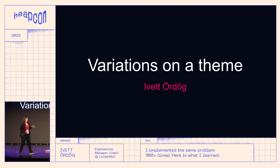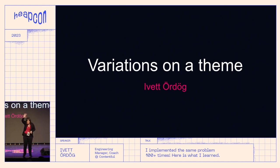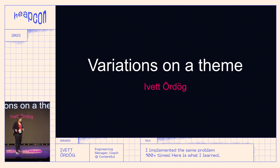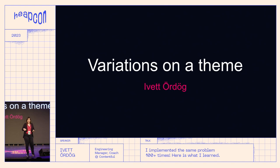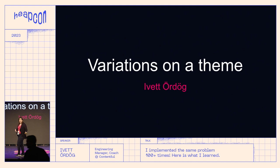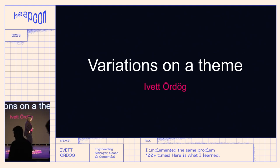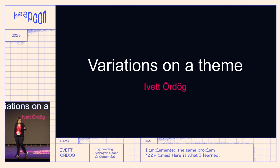How many of you have been to a code retreat before? Okay, a few people. For those who don't know what a code retreat is: a bunch of software engineers get together, have 45 minutes to implement a specific problem, the goal is to do it in a different way than you usually do, and then you delete your code and do it again — five more times.